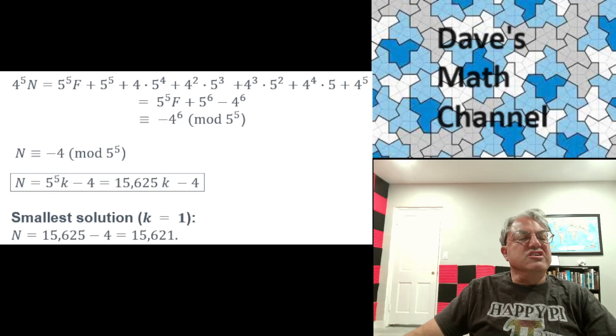So the general solution is N equals 5 to the fifth K minus 4, where K is some positive integer. It could be any positive integer. The smallest solution we get is the solution when we plug in K equals 1. So when we plug in K equals 1, we just get 5 to the fifth minus 4, which works out to be 15,621. That's the smallest possible number of coconuts we could have started with to get this solution.